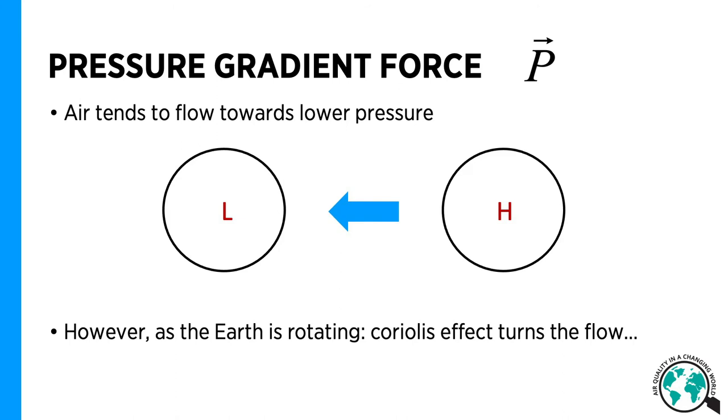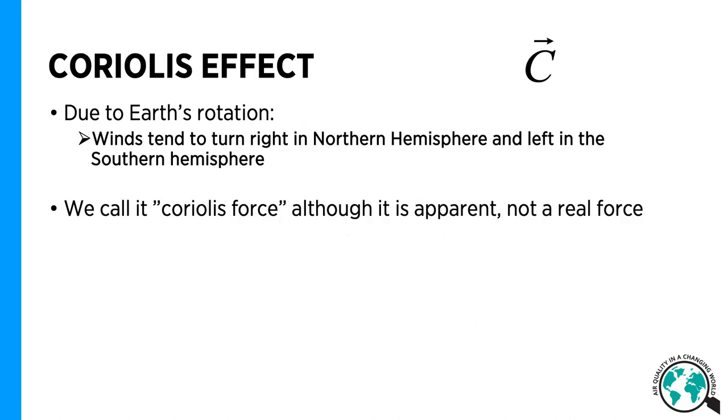The air flows from the higher pressure towards the lower pressure, but the earth is rotating, so the Coriolis effect turns the flow. Due to Coriolis effect, winds tend to turn right in the northern hemisphere and left in the southern hemisphere. We call it as the Coriolis force, although it's not a real force, but apparent due to our point of view in the surface of a rotating earth.